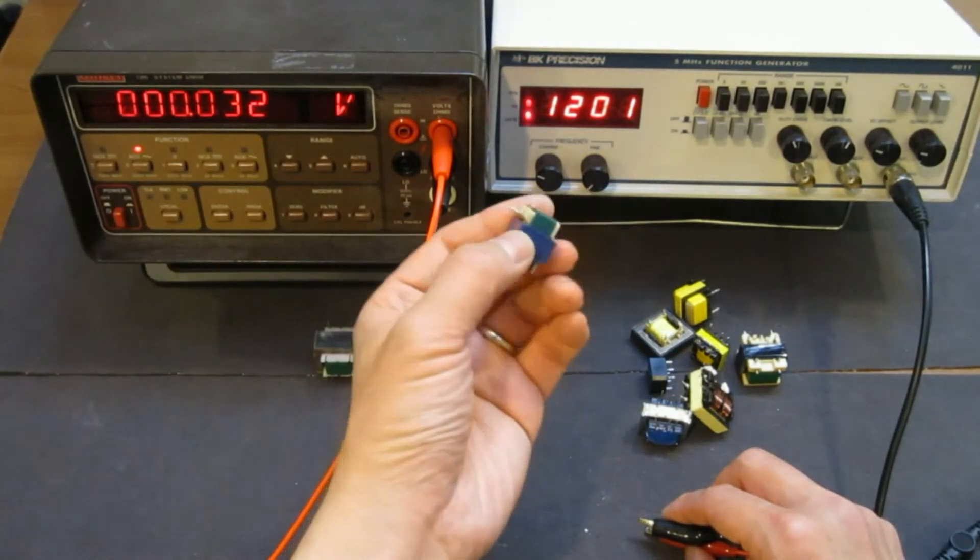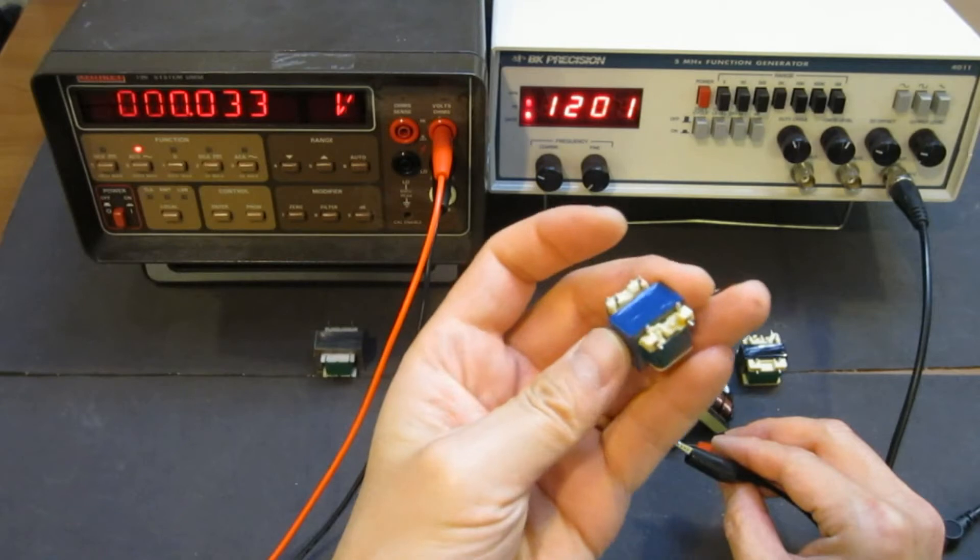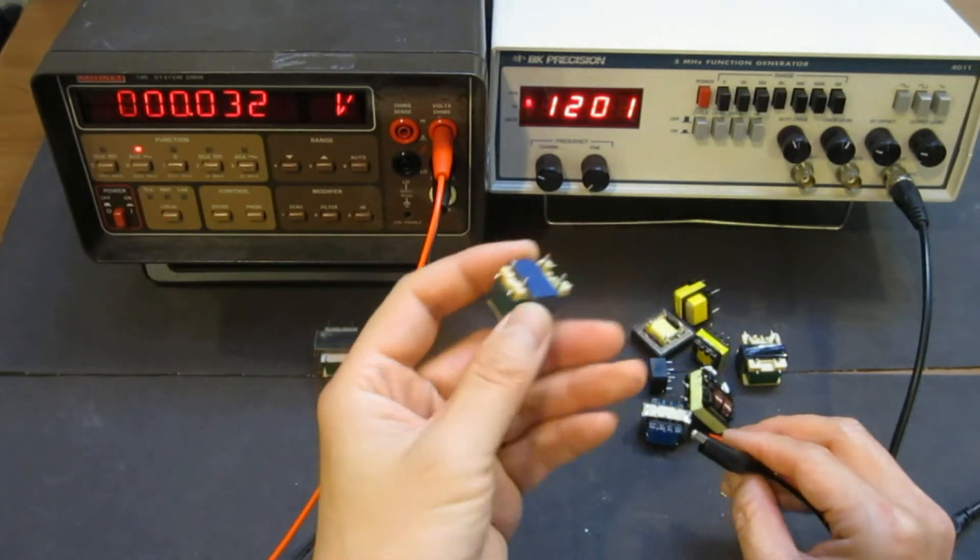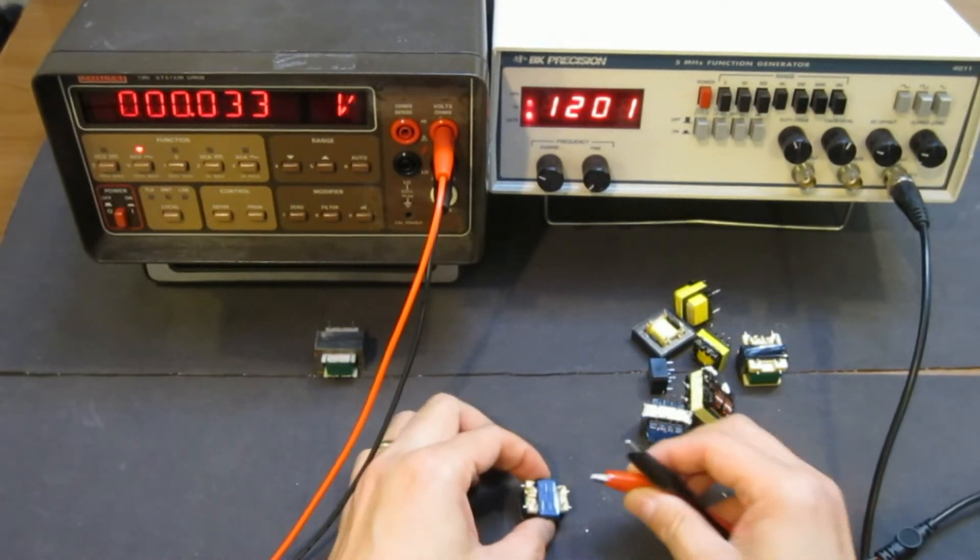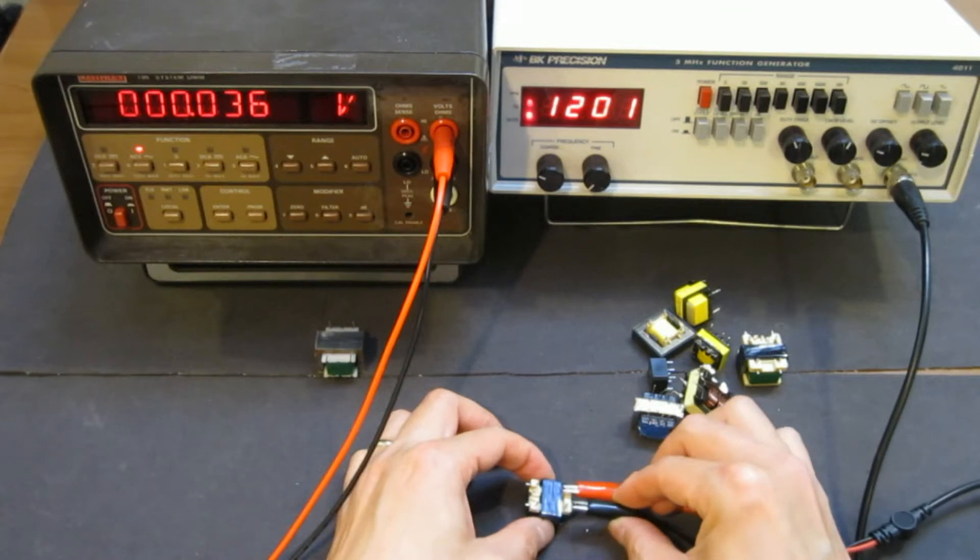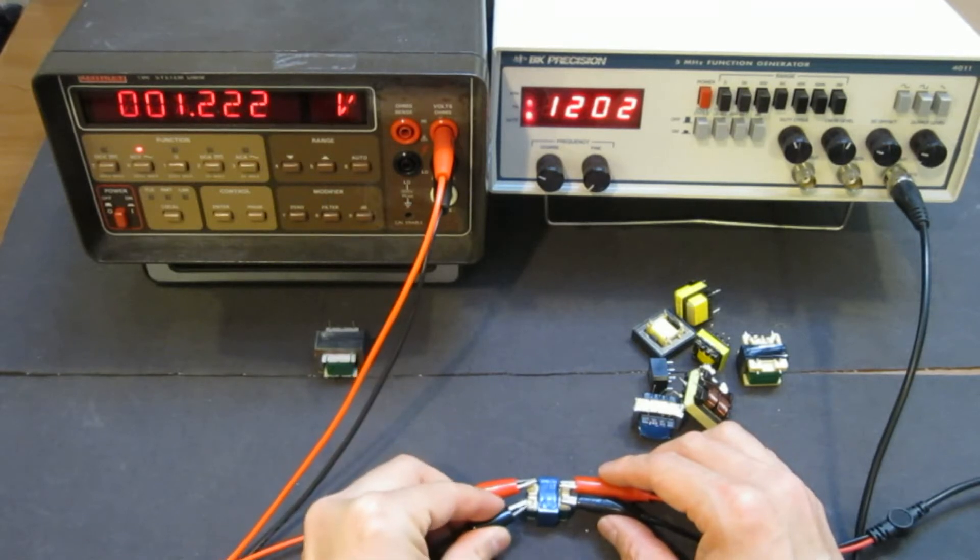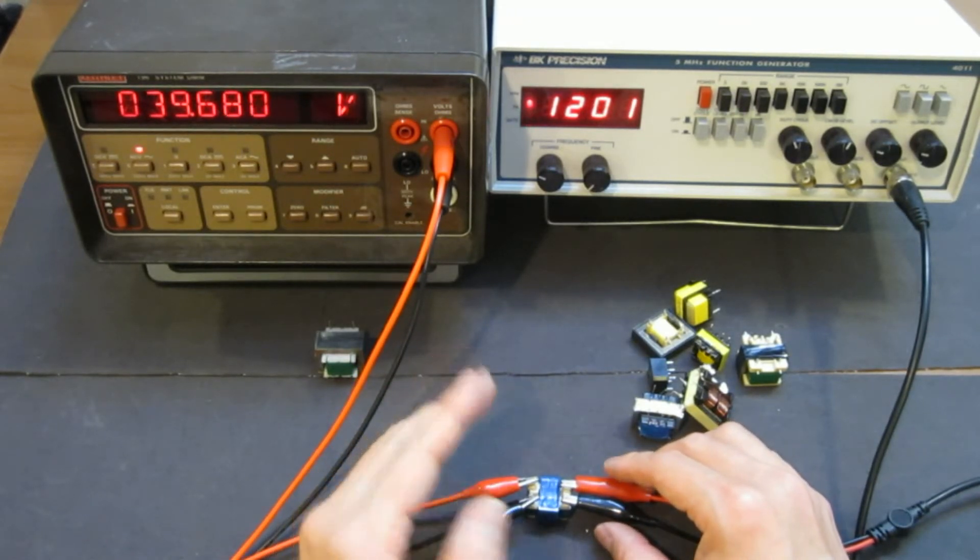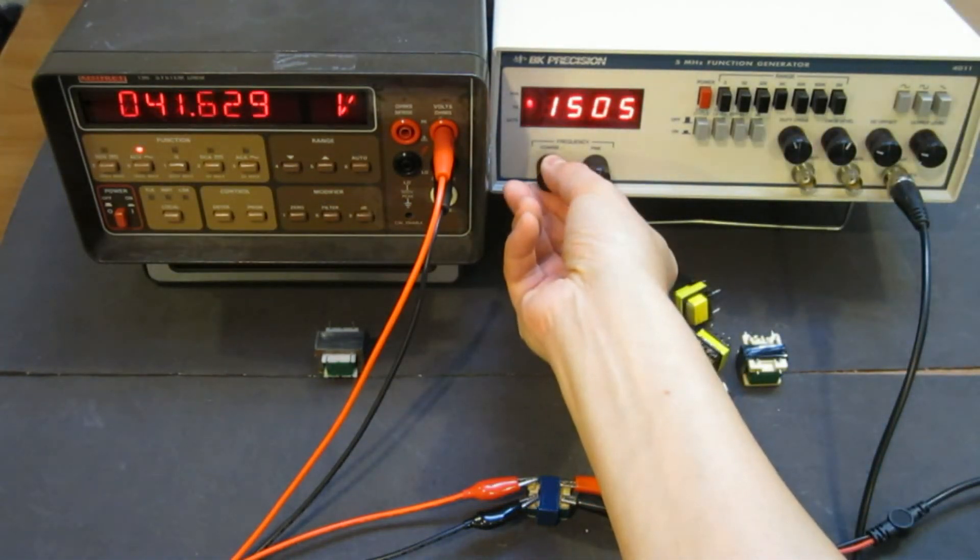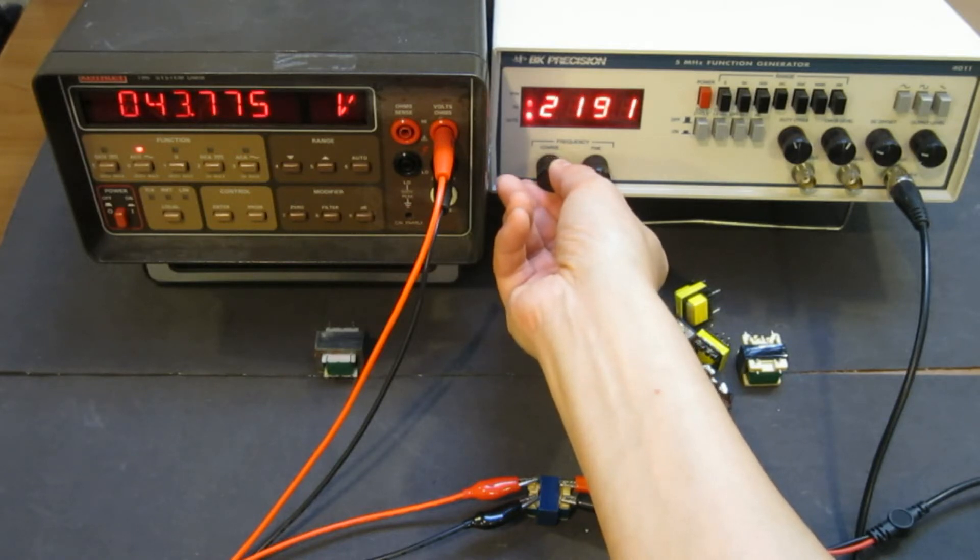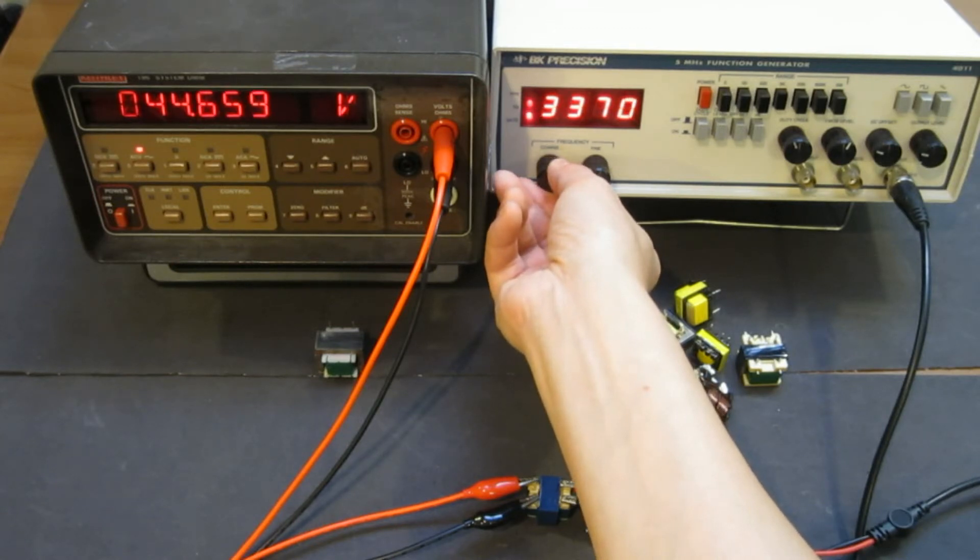So let's take a look at another transformer here. So this one, by the look of it, it's also a step-up transformer because one side of the winding is thicker, much thicker than the other side. So let's put our input voltage here and let's measure the output. So now we have again, like a 40, roughly 40. So if we adjust the output frequency, as you can see that this one has a much higher operating range than the previous one we just did.